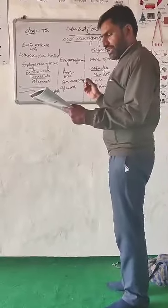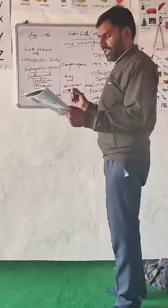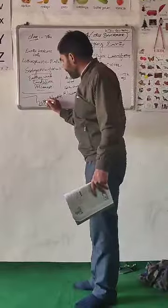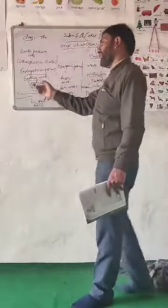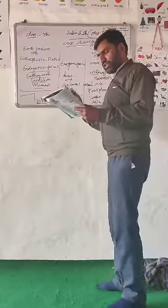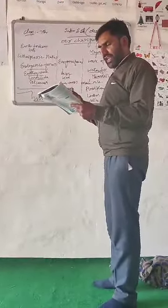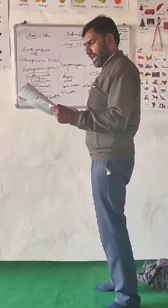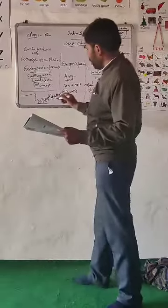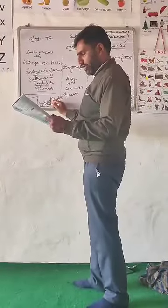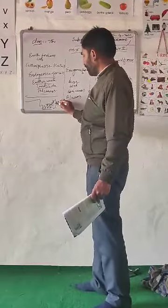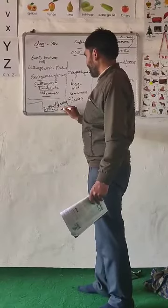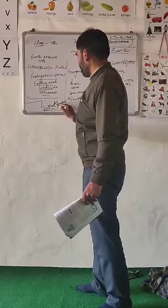A meander is due to continuous erosion and deposition along the sides of the meander. The ends of the meander loop come closer and closer. In due course of time, the meander loop cuts off from the river and forms an oxbow lake.